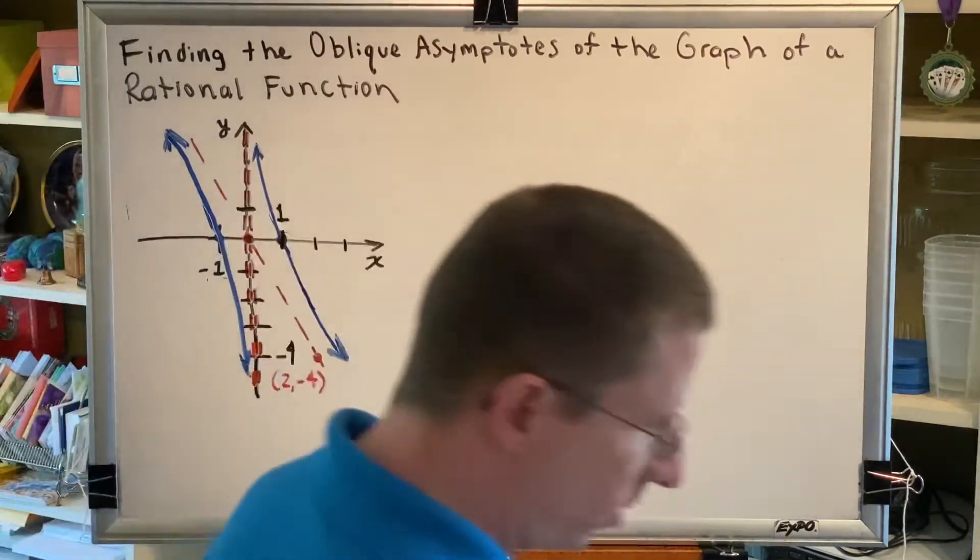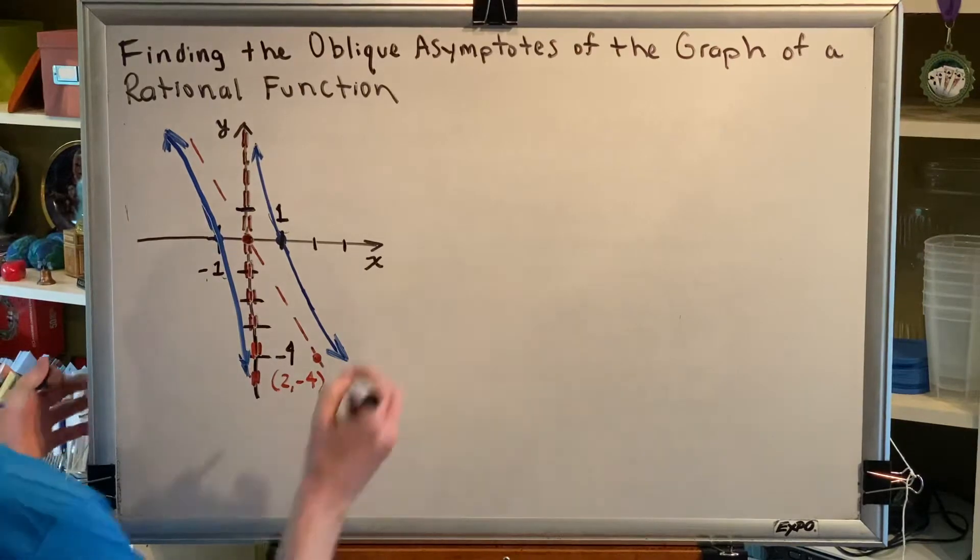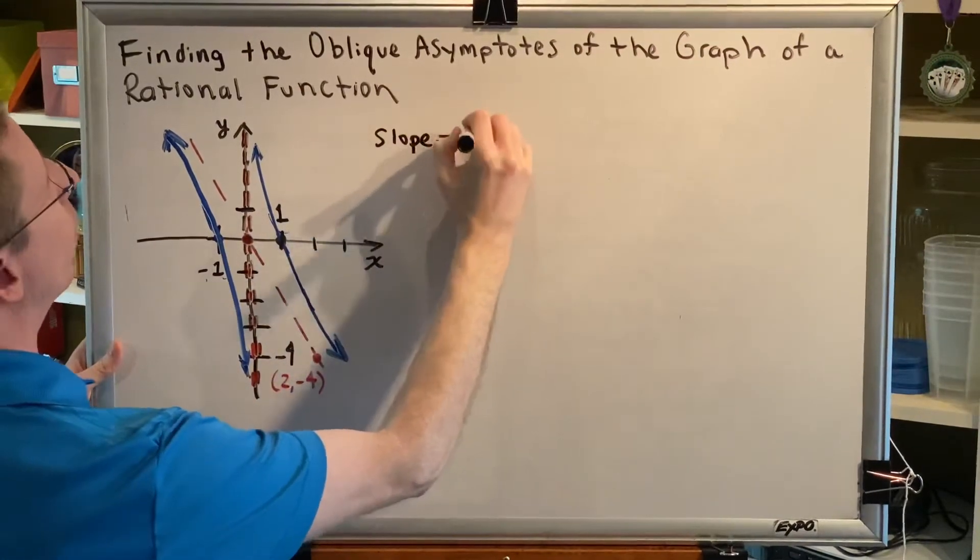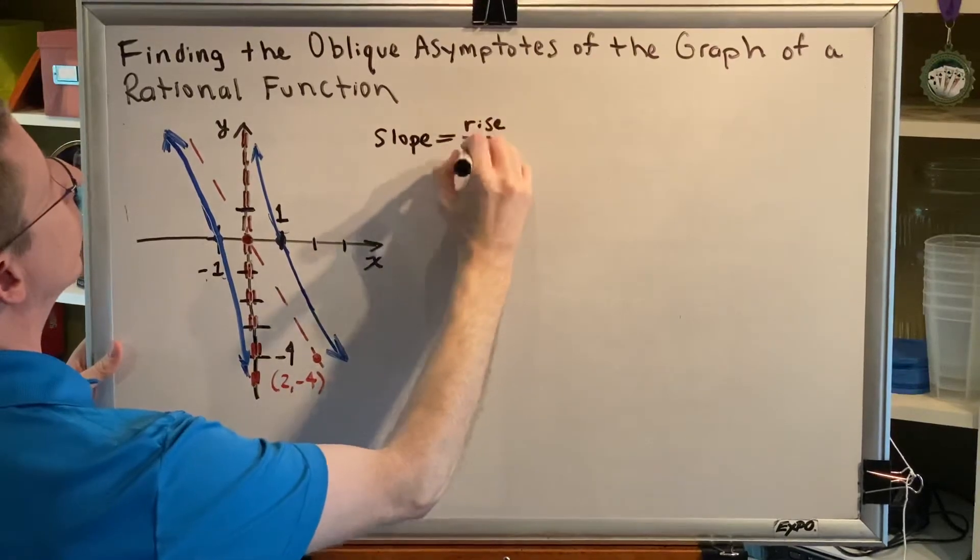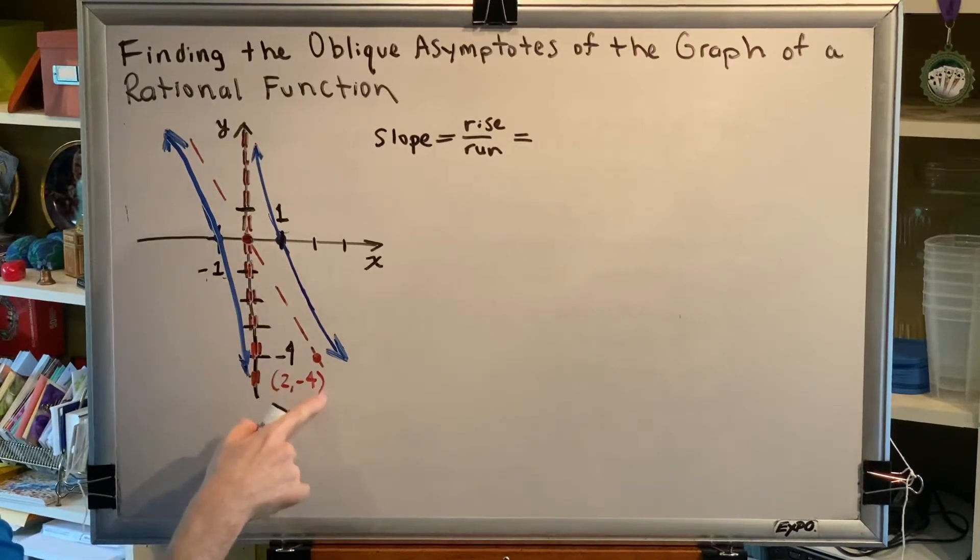With those points we can determine the slope of our graph. This is actually very easy to do. If you remember that slope is equal to rise over run, then you can track how far you have to travel to get from the origin to this point.